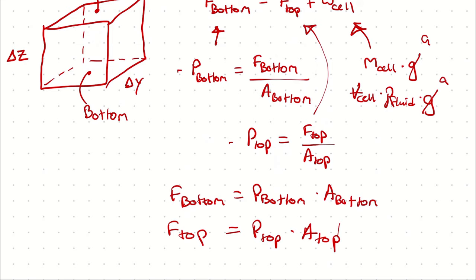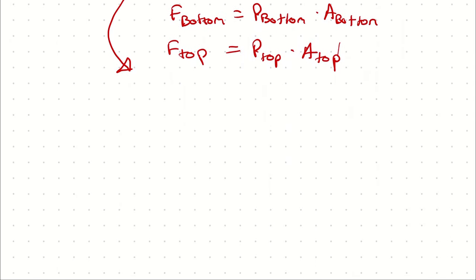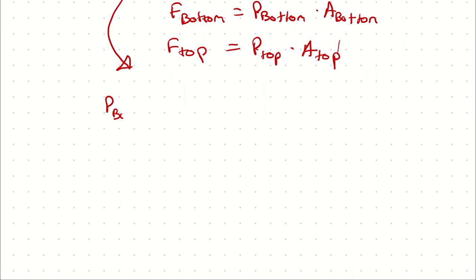Now we're describing weight as the volume of the cell times the density of the fluid times acceleration. Rearranging and solving yields P_bottom times A_bottom equals P_top times A_top plus the volume of the cell times the density of the fluid times the acceleration the fluid cell is experiencing.